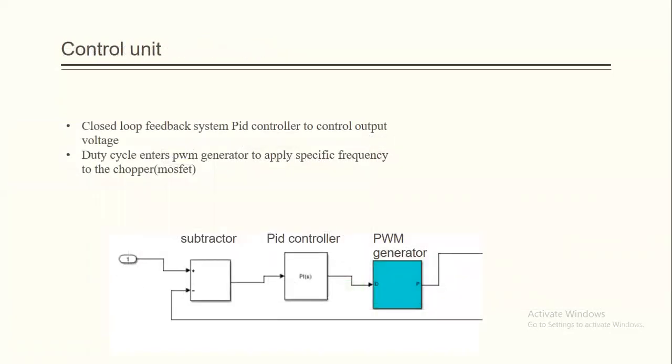As for the voltage control system, number one will be the desired input voltage, and here number two to the negative will be the voltage output. The subtractor will give us the difference between them, the error. The PID will provide the PWM generator with a duty cycle specific and depending on the error. The PWM generator will feed the IGBT switching mode on and off in order to control the output.